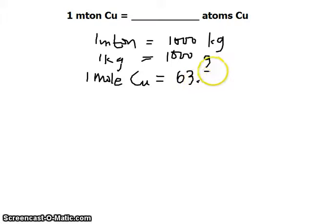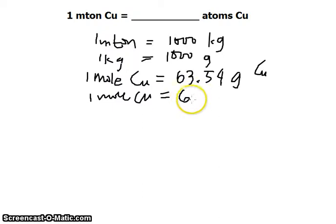And we have 63.54 grams of copper. But also 1 mole of copper is equivalent to Avogadro's number which tells us the number of atoms or molecules if it is a compound. So we have 6.022 times 10 to the 23rd power atoms of copper.